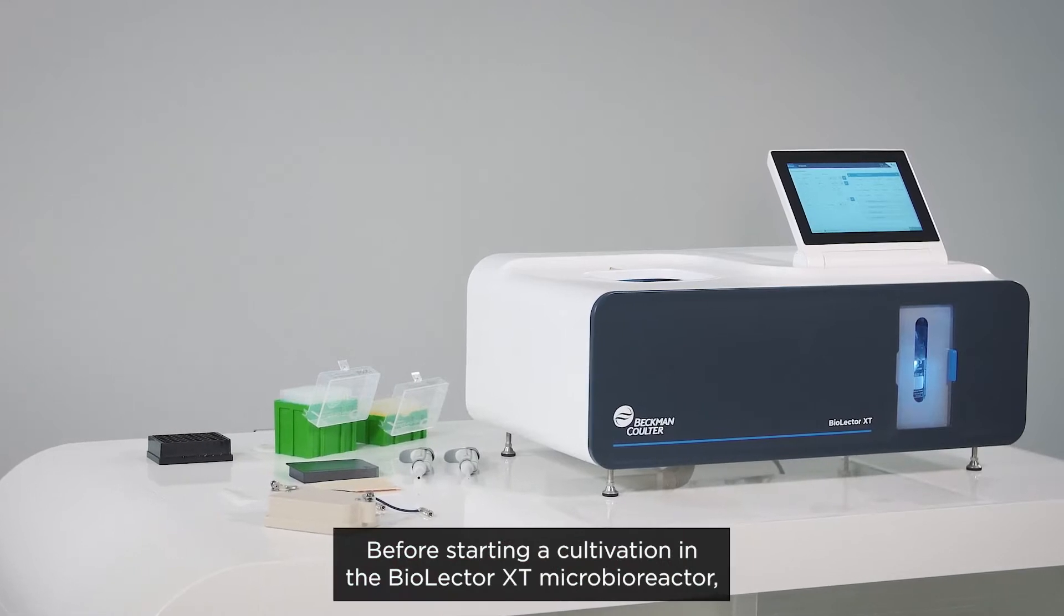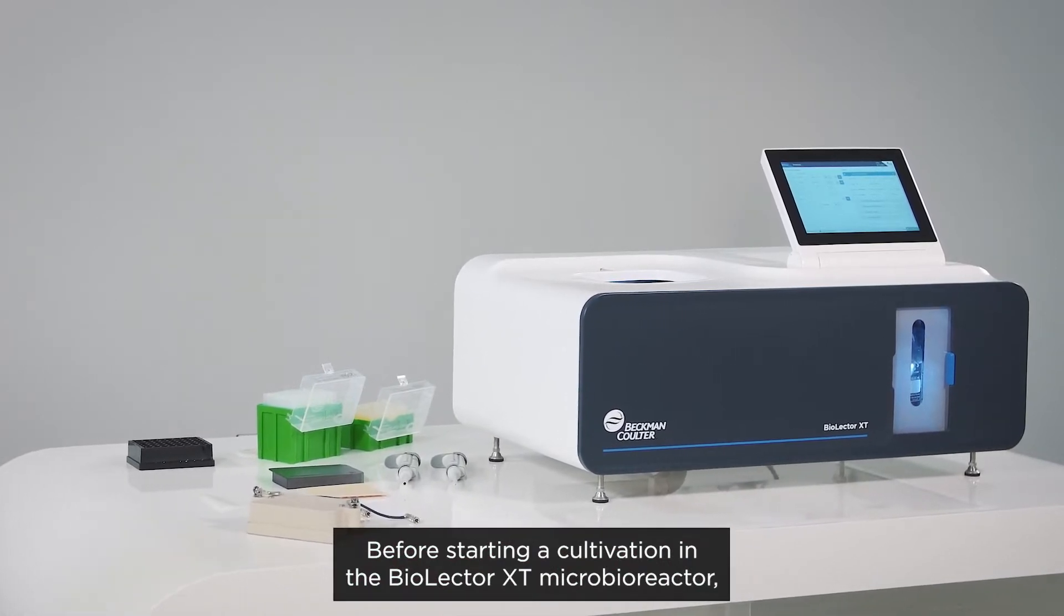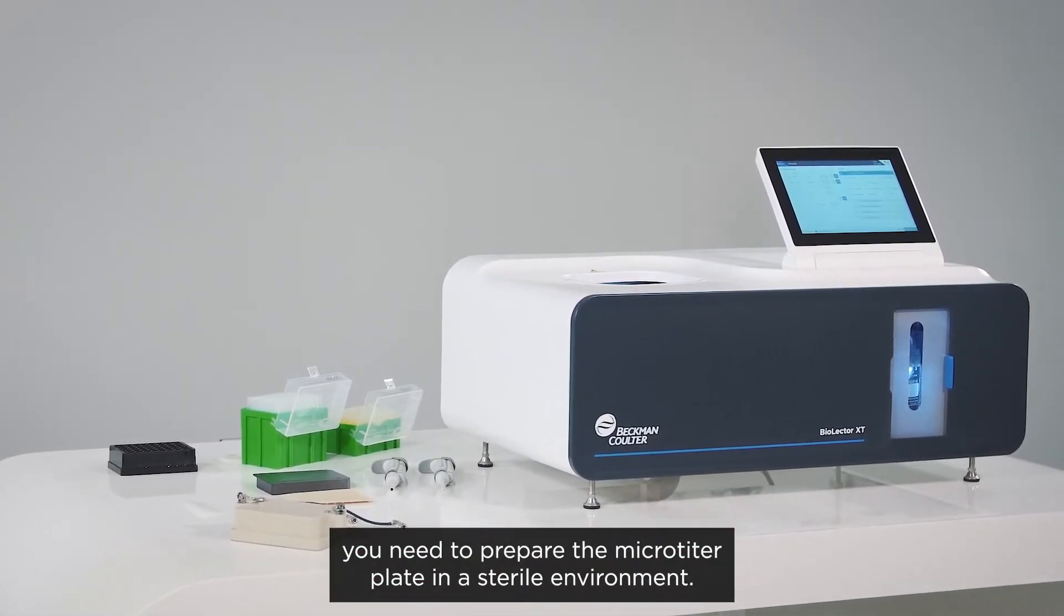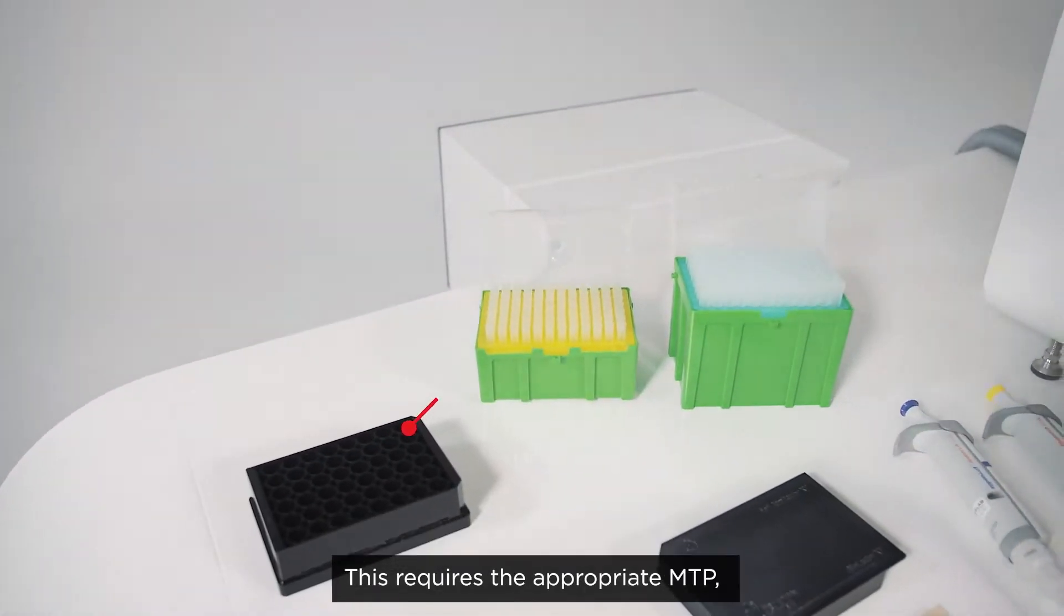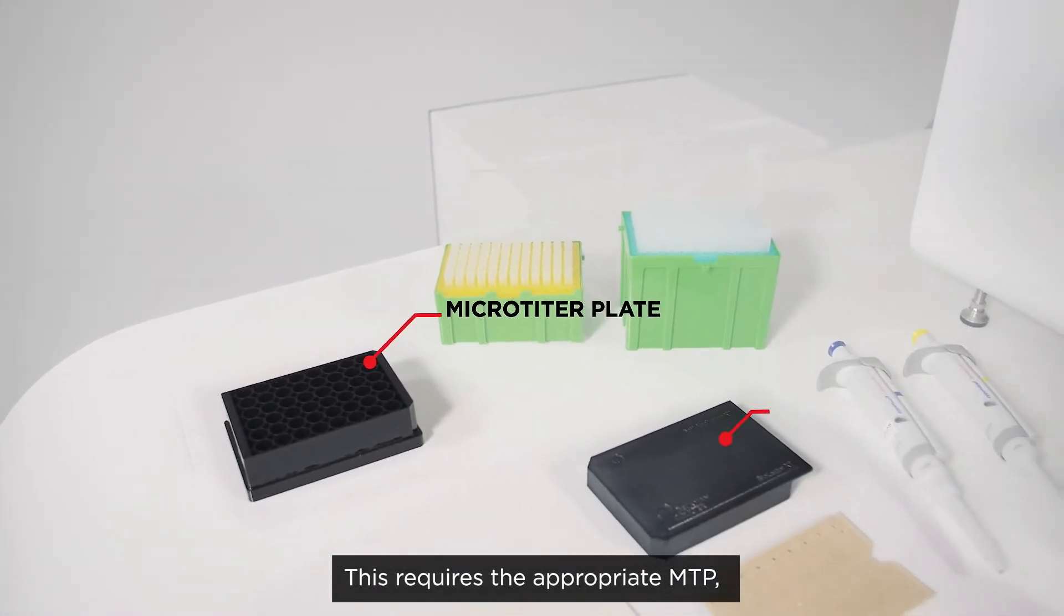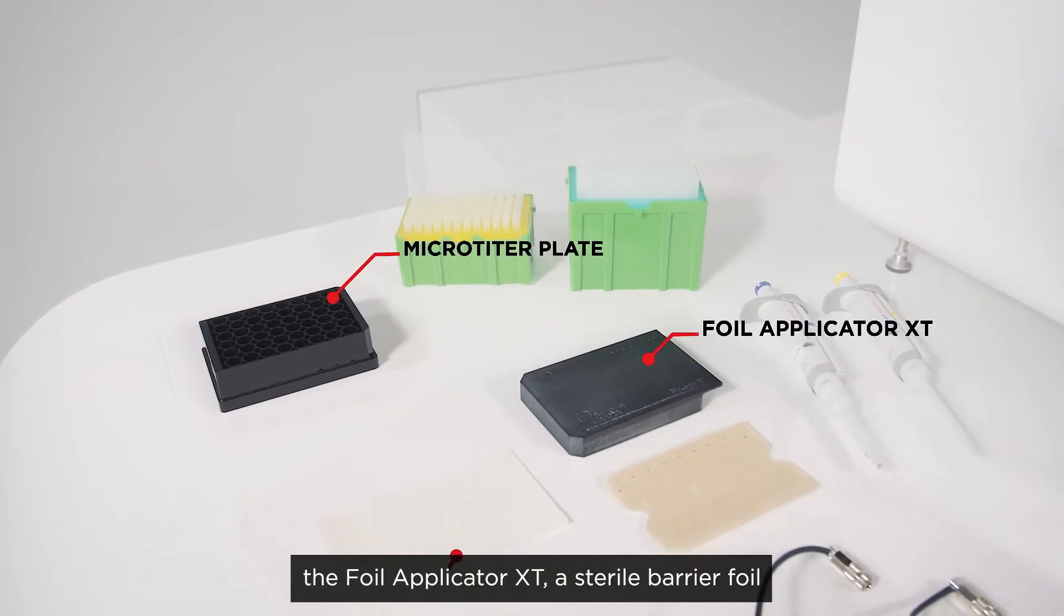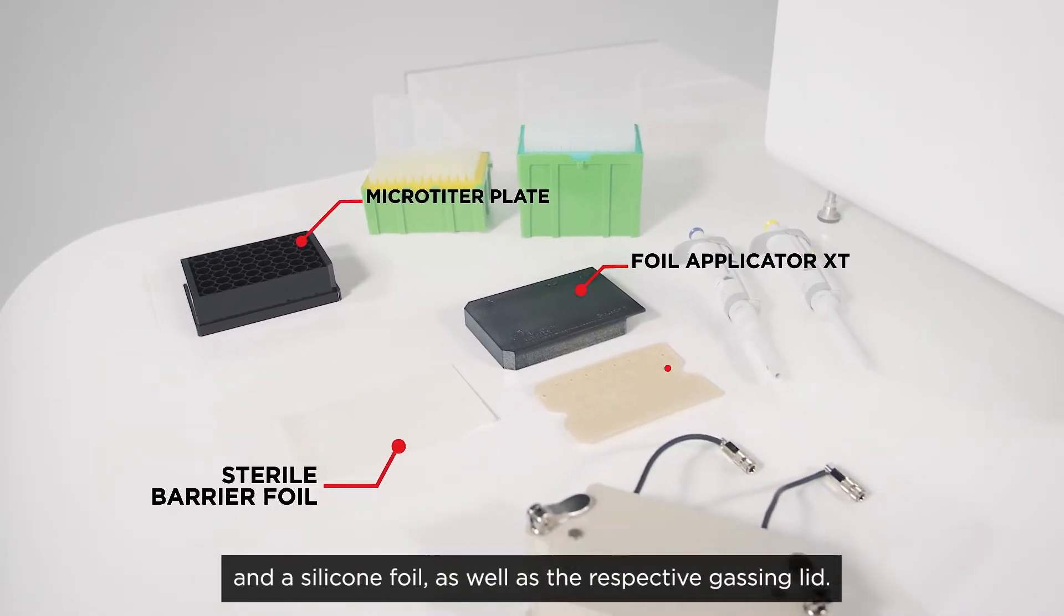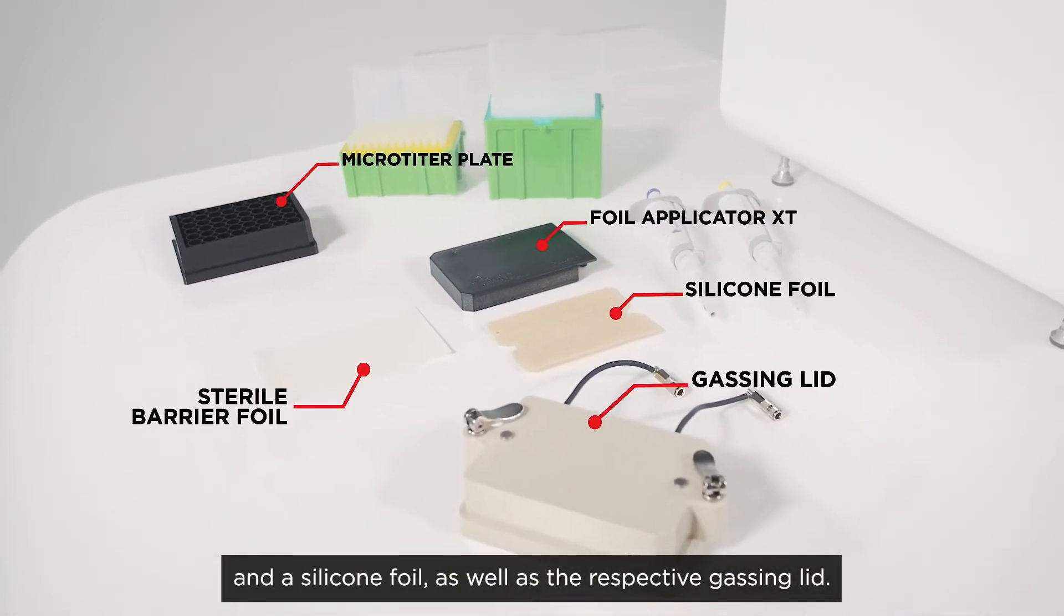Before starting a cultivation in the BioElector XT Microbioreactor, you need to prepare the microtiter plate in a sterile environment. This requires the appropriate MTP, the Foil Applicator XT, a sterile barrier foil, a silicone foil, and the respective gassing lid.